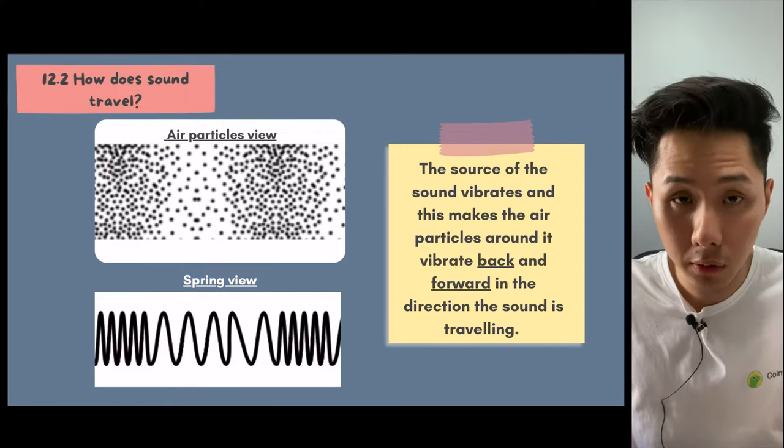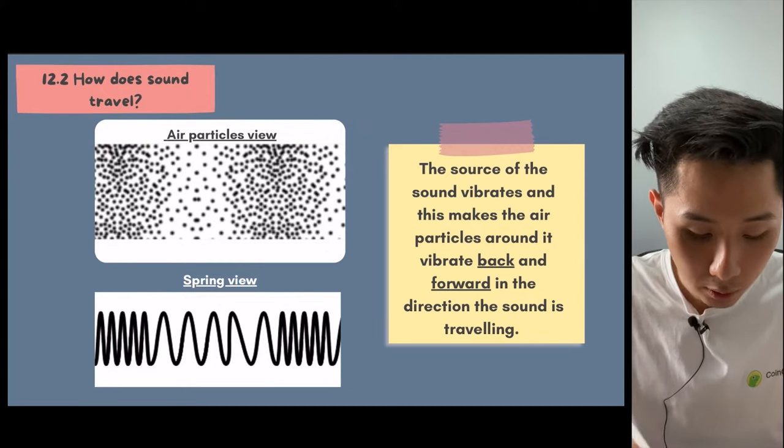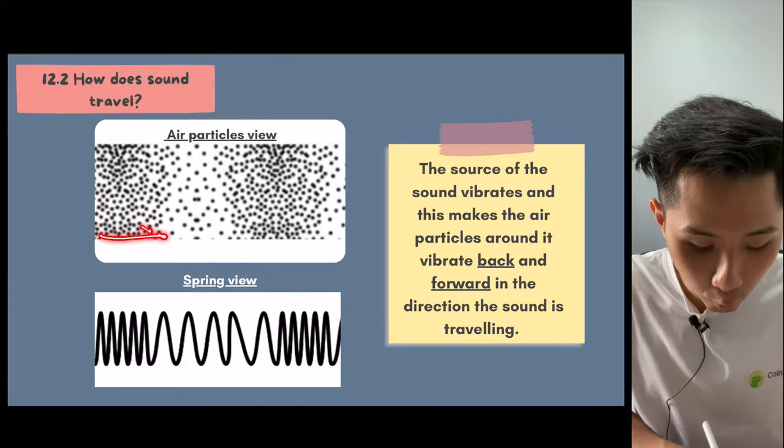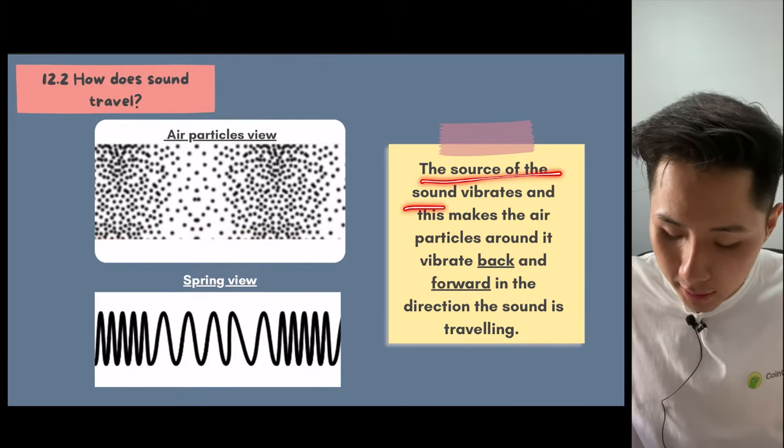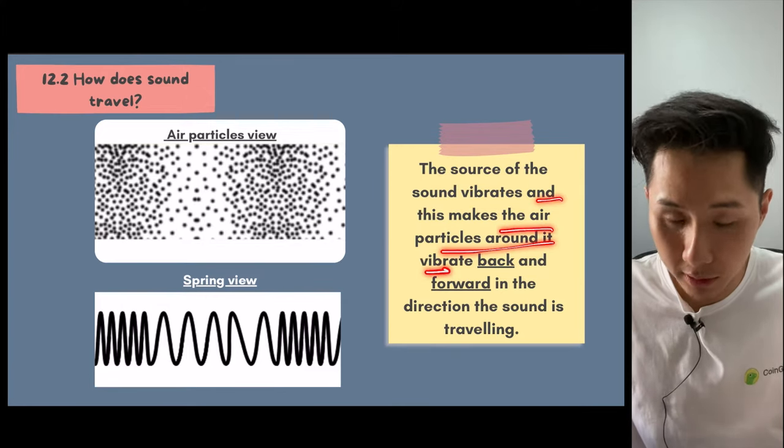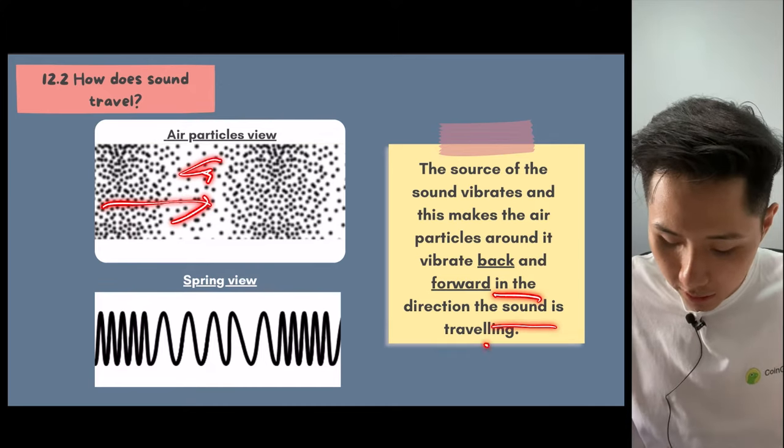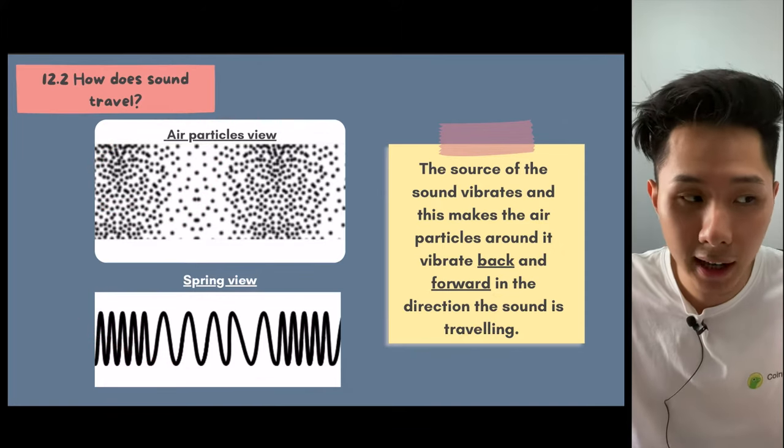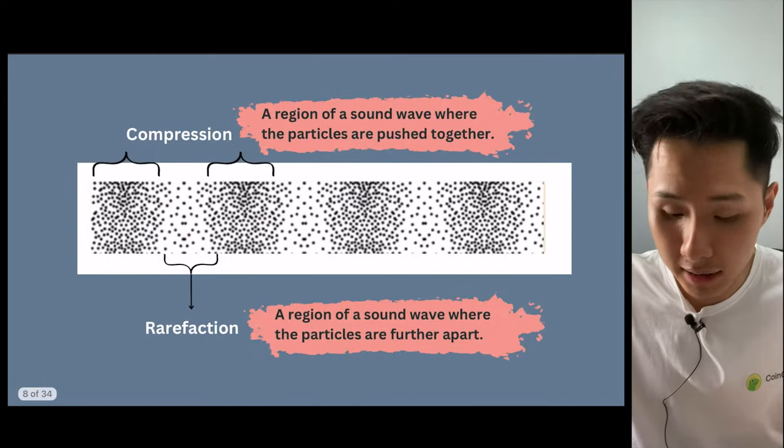How does air travel? We know that sound requires medium to travel. This is an air particle view of how sound is being carried from one place all the way to another place. The source of the sound vibrates, and this makes the air particles around it vibrate back and forth in the direction the sound is traveling. As we'll learn in future chapters, this is actually called longitudinal waveform, but we'll talk about that more in future videos.